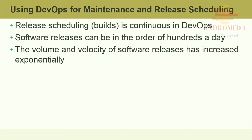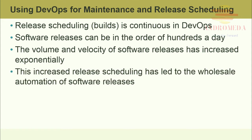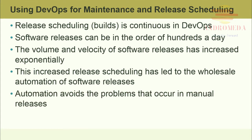Builds and deploys are no longer clumsy manual processes. This increased release scheduling has led to the wholesale automation of software releases. Automation avoids the problems that occur in manual releases by building in consistency into the build-deploy process. Continuous integration allows DevOps personnel to improve the process of the build release cycle, rather than concentrate on each individual application being deployed.